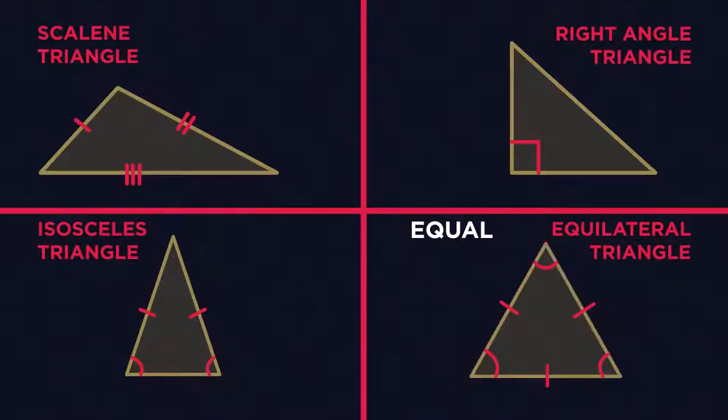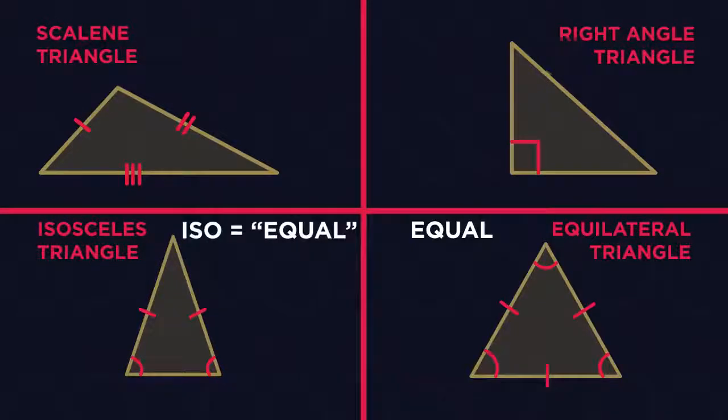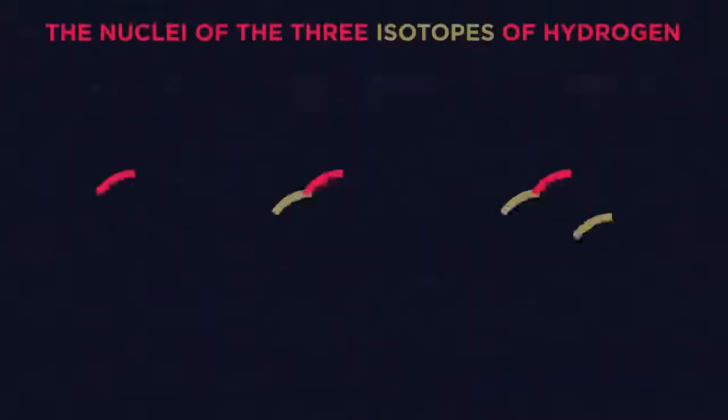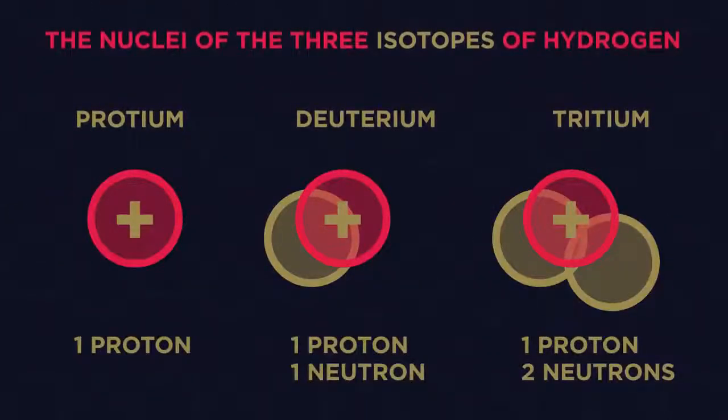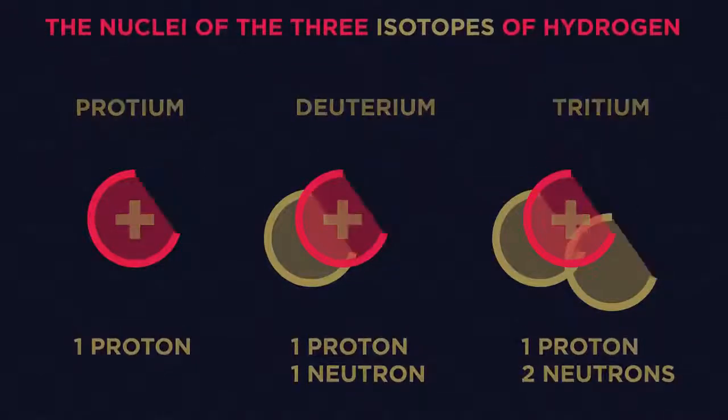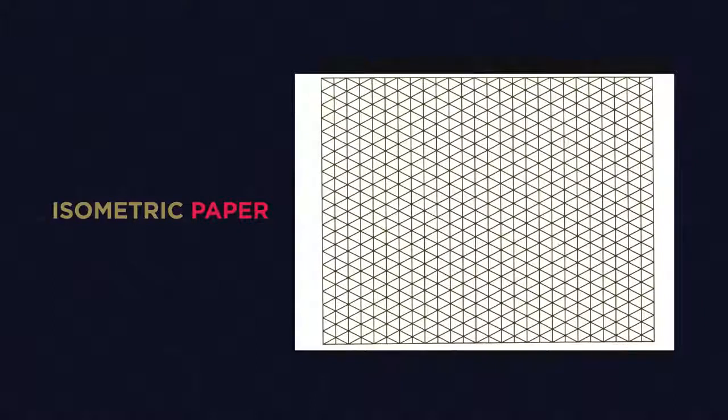Isosceles and scalene are a little harder to remember. A good bit of general knowledge is that the prefix iso means equal. So in chemistry, you learn about isotopes, which are atoms that have an equal number of protons.